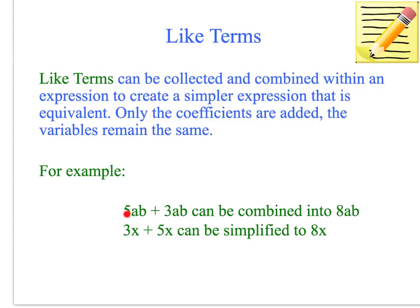You can see in this example here, we've got 5ab and 3ab. The variables are both a and b. We only add the coefficients. So 5 plus 3 equals 8ab. Because we've got 3 a's and 3 b's, and here we've got 5 a's and 5 b's. So together we've got 8 a's and 8 b's, which is 8ab.